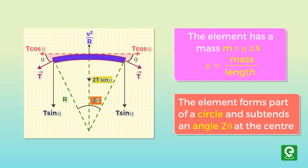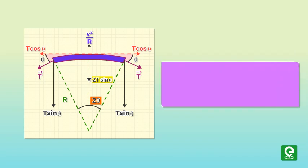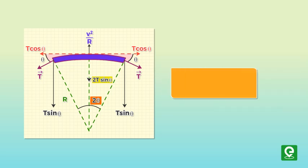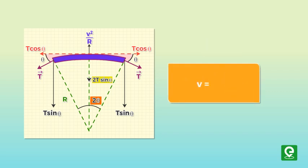Thus, mass of the element m equals 2μr theta. Applying Newton's second law on this element in the radial direction, we get 2T theta equals mv squared by r. On substituting the value of mass, we get speed of wave equal to square root of T divided by μ.